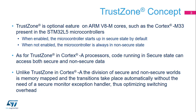As for TrustZone in Cortex-A processors, code running in secure state can access both secure and non-secure data. Non-secure data accessed by secured software is tagged as non-secure to pass downstream firewalls. TrustZone for Cortex-A is based on a secure monitor which is in charge of switching the two secure worlds, so transitions are requested through software exception taking and returning. TrustZone for Cortex-M is based on memory mapping, enabling direct access to the secure world by using function calls and returns, thus optimizing switching overhead.